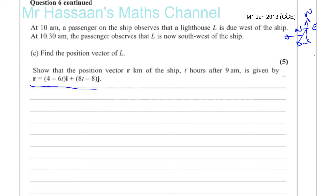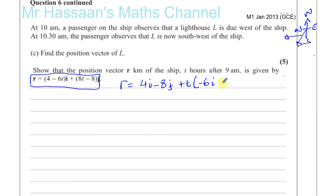We already found the position vector of the ship in the first part of the question. Let me rewrite this separating the position and velocity components: you've got 4i minus 8j as the initial position, plus t times minus 6i plus 8j as the velocity. This tells us the direction it's moving in, and this is the position vector when time was zero. Time is measured in hours.